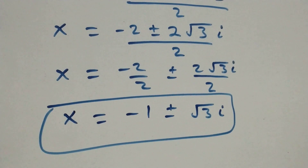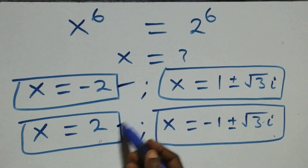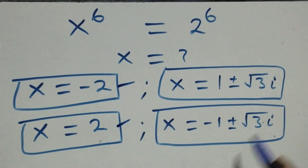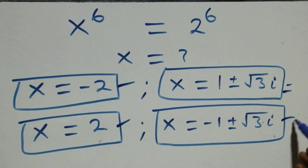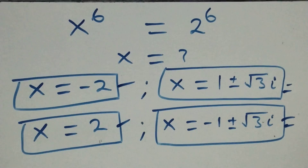Therefore, in total we have six solutions: two real solutions (x = -2 and x = 2), two complex solutions from the first case, and two complex solutions from the second case. Thank you for watching — don't forget to subscribe, share, give it a thumbs up, and see you next class!